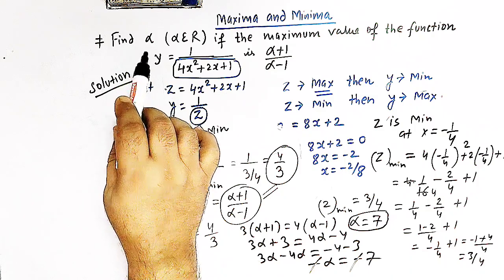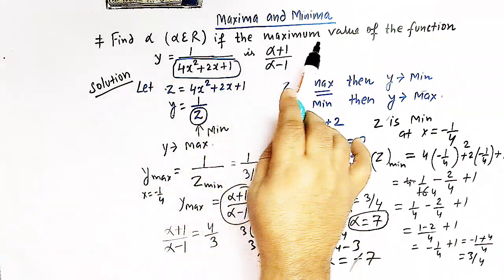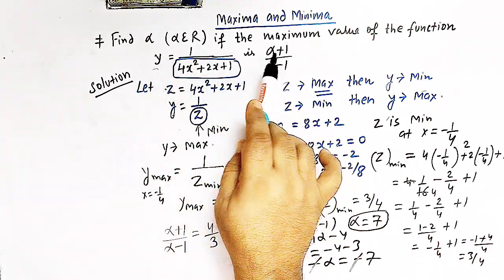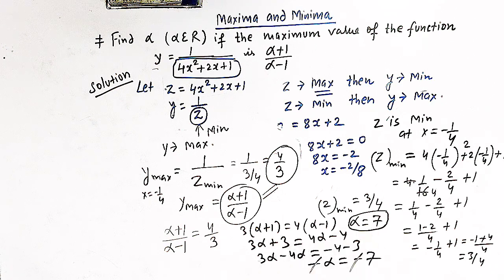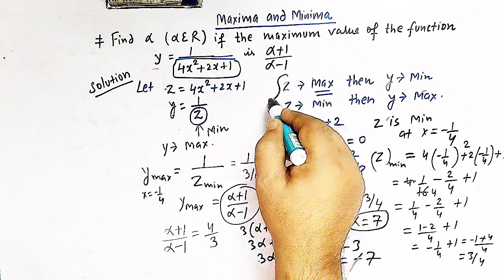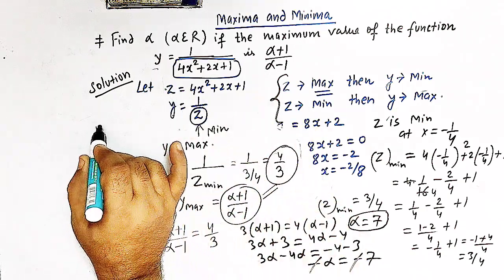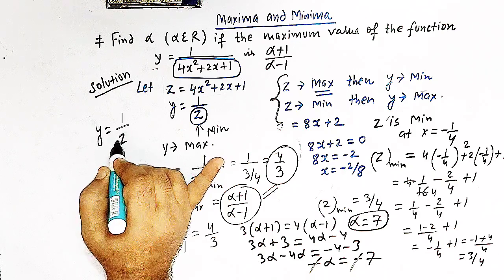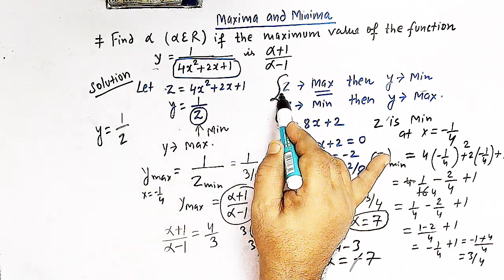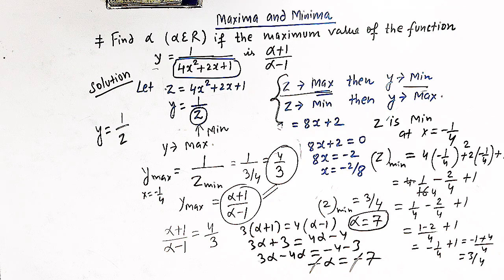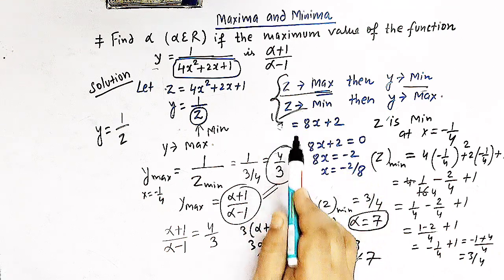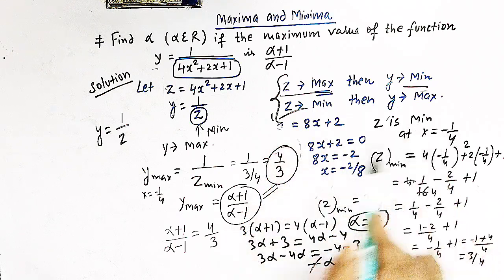So the required value of alpha is 7. The maximum value of this function y was given as (alpha + 1)/(alpha - 1), and we obtained y_max = 4/3. Equating these and solving gives alpha = 7. Always remember: whenever y = 1/z where z is some function of x, if z is maximum then y is minimum, and when z is minimum then y is maximum. Here z is minimum at x = -1/4, which gives us the maximum of y.